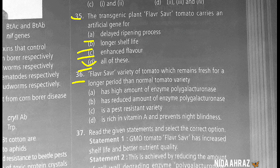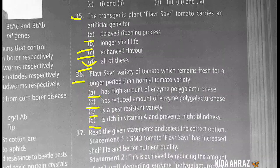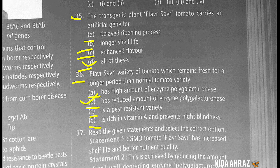The Flavr Savr variety of tomato, which remains fresh for a longer period than normal tomato, has a reduced amount of the enzyme polygalacturonase. The correct choice is option B.